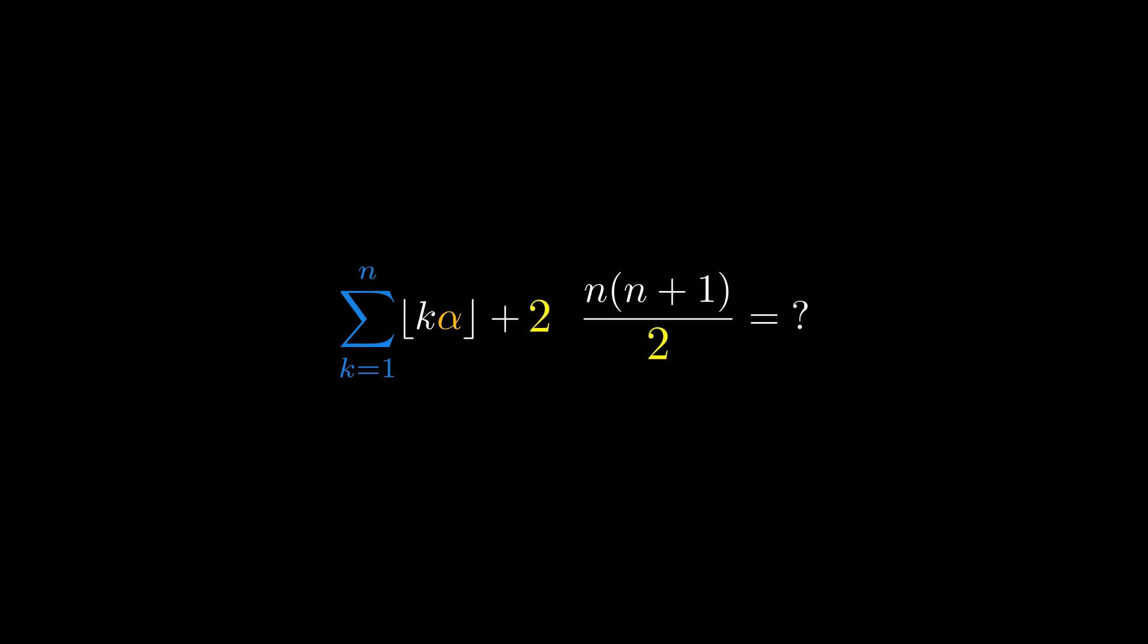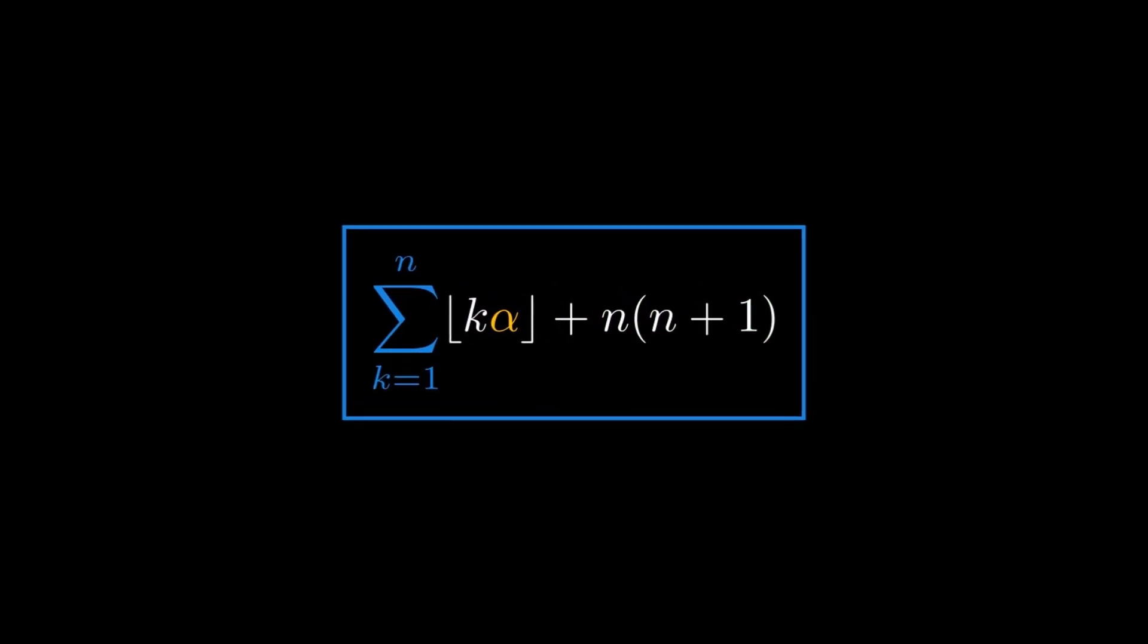So we factor by 2 and we simplify by 2 to get n times n plus 1. Our initial sum is a multiple of n by hypothesis, and the second part is also a multiple of n. So the whole expression is indeed a multiple of n.